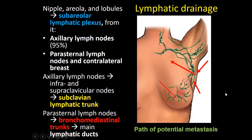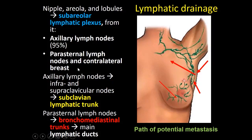Finally, lymphatic drainage is important because it's another path of potential metastasis. It was discovered that basically all the lymphatics go to a subareolar lymphatic plexus, before about 95% of it drains towards the axilla into the axillary lymph nodes. Some of the remaining percentage drains into the parasternal nodes and even into the contralateral breast. The axillary lymph nodes drain into the subclavian lymphatic trunk, and the parasternal lymph nodes drain into the main lymphatic ducts.